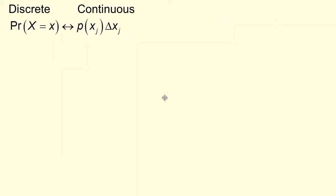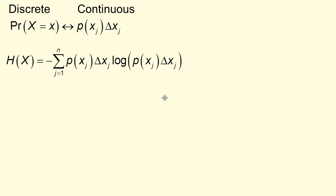So let's look at what we're trying to do here. In the discrete case, we have the probability that capital X equals little x. In the continuous case, we're taking the probability density times delta x_j, saying that is the probability that something happens between x and x + delta x. So the entropy of a continuous variable x would be the sum of p(x_j) delta x_j — that's the probability — times the log of p(x_j) delta x_j.